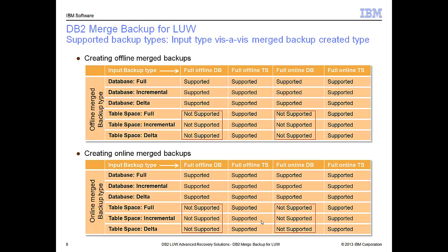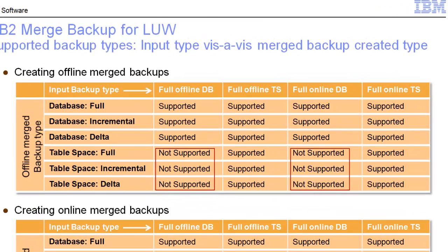This chart tries to show the support for how you can mix and match both online and offline, database and tablespace backups in order to merge them together. It's probably best to say what is not supported — because you can take pretty much any combination of backups and produce merge backups from them, with one exception. What this chart is saying is: if you have a full backup at the database level, you can use database or tablespace backups to create merge backups from that.